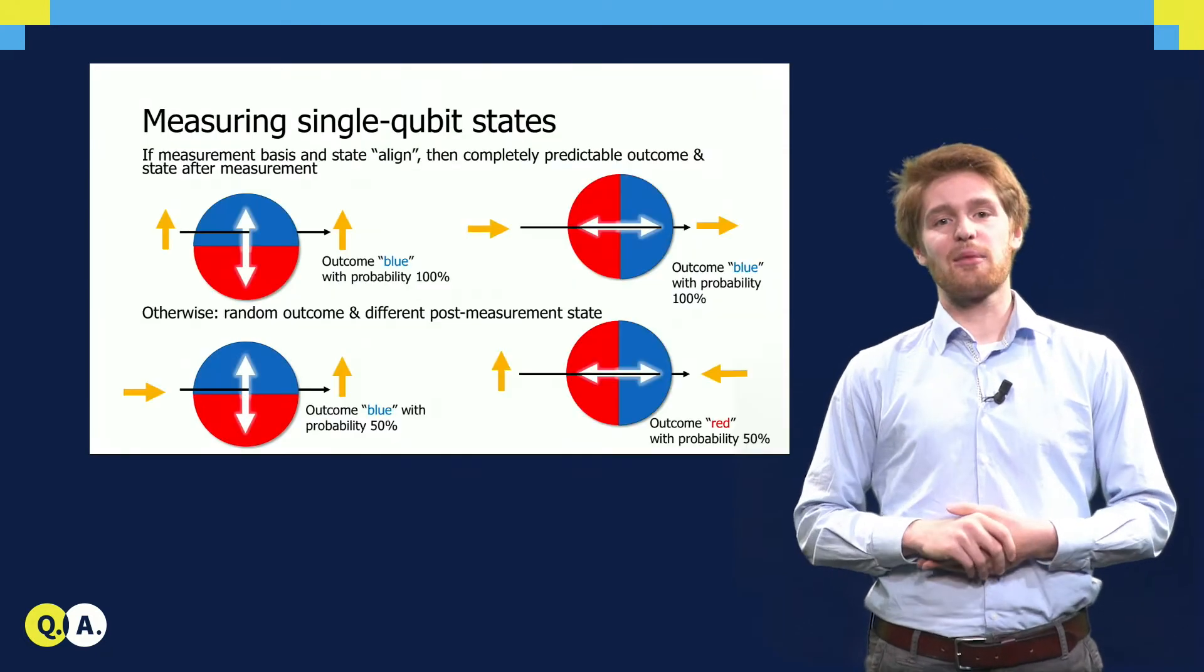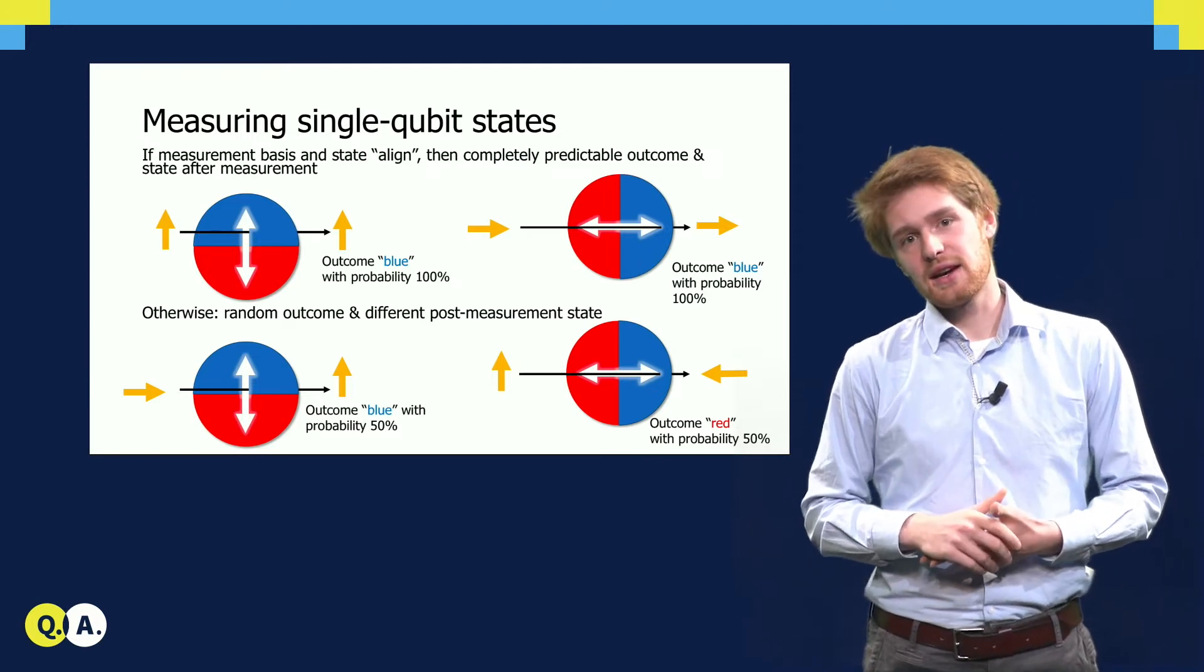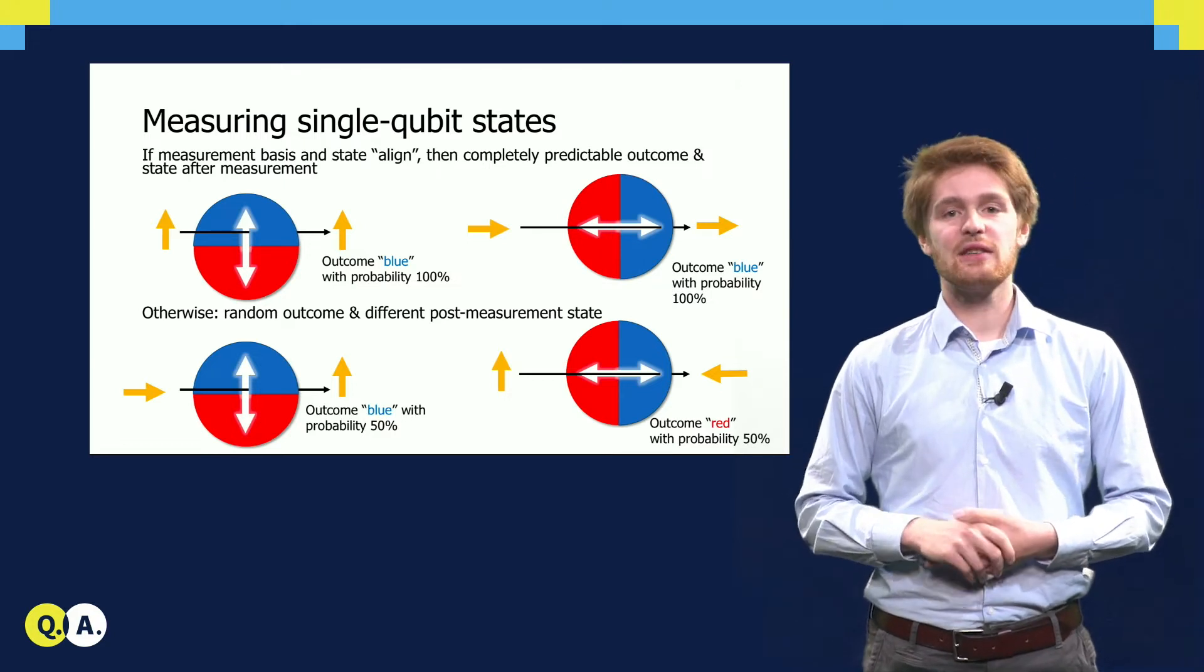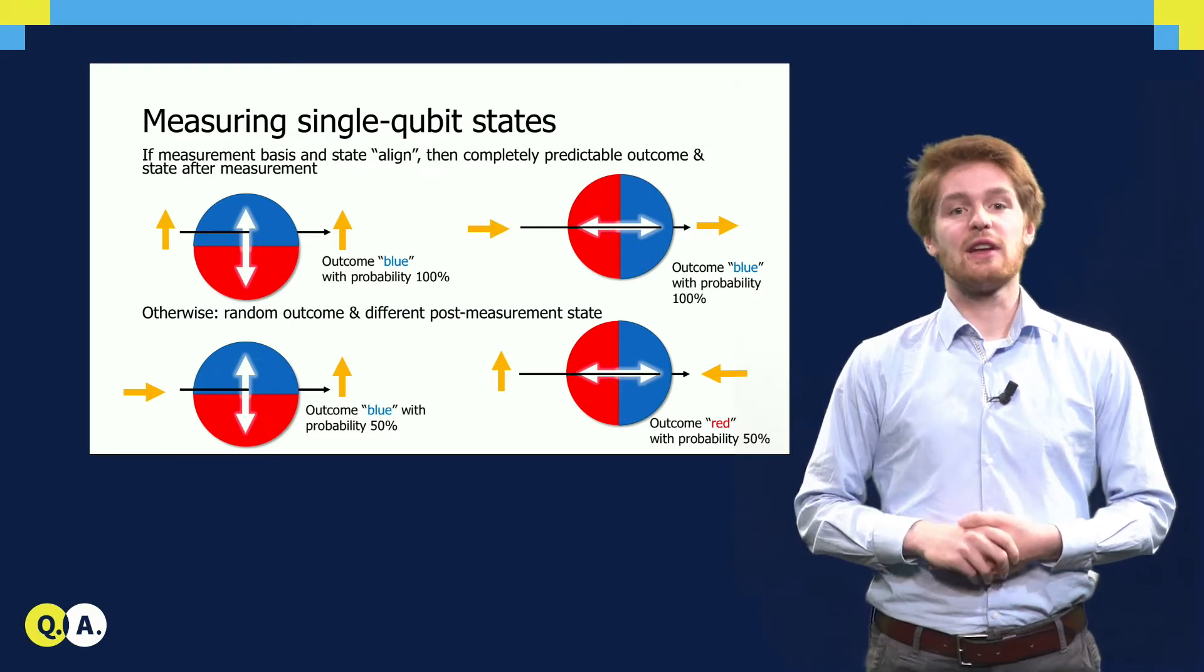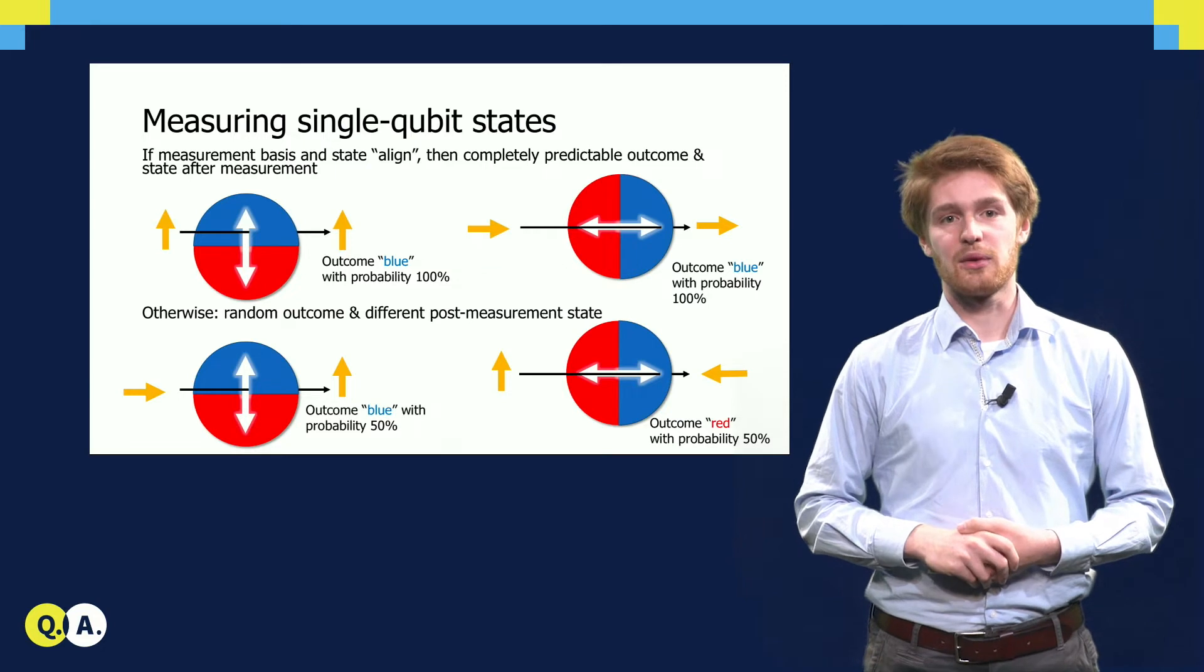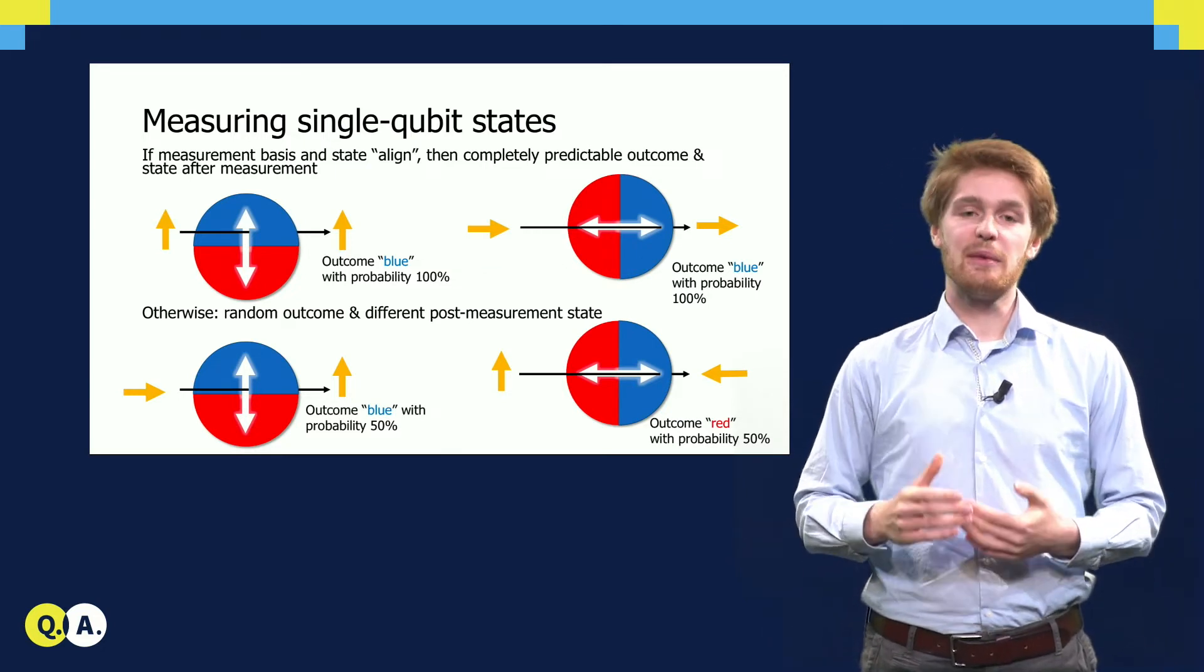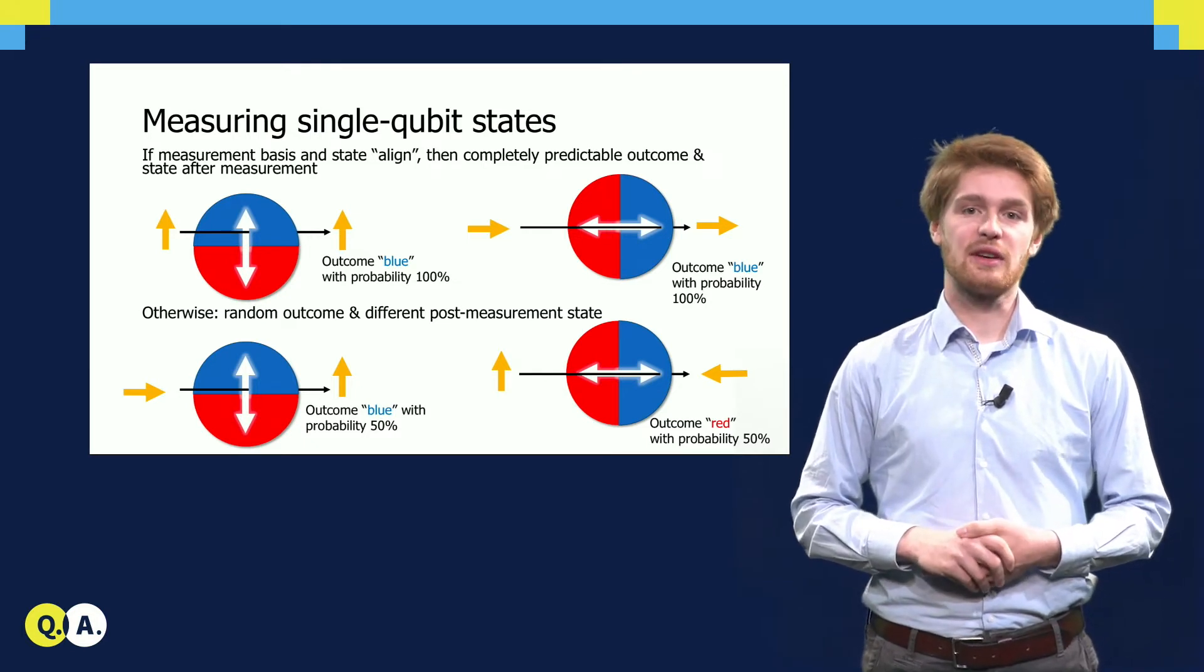Let us do a short recap of measuring single qubit states. Suppose we have a qubit, a yellow arrow, and a measurement basis, the round slits. And now we measure the qubit in the basis. Then if the state of the qubit aligns with the measurement basis, then only a single outcome is possible. Moreover, the state of the qubit does not change, and from the measurement outcome we learn its state. This situation is depicted in the upper two examples.